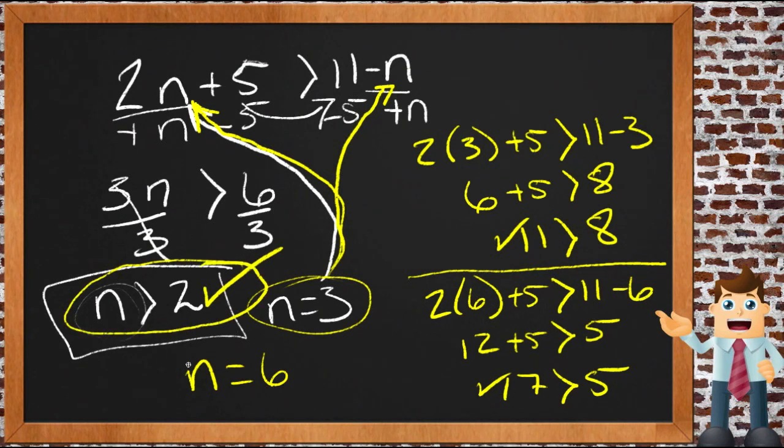So our answer then looks to me like it's exactly correct. n is indeed greater than 2. So you can check it very much the way you would check an equality. Just take the answer that you come up with, substitute it back in for the variable in the original equation, and see if the statement comes out to be true. If it does, your answer is correct.